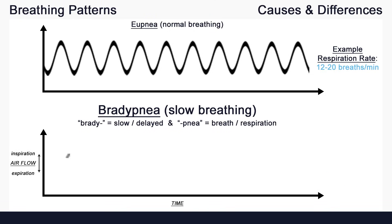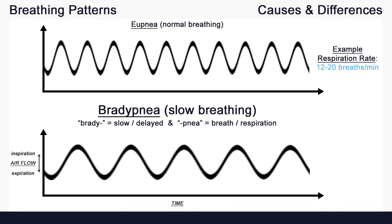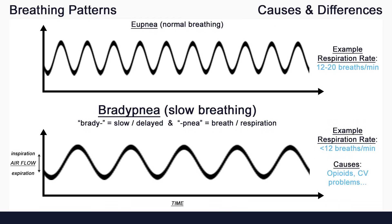Bradypnea, or slowed breathing, is simply the opposite of tachypnea. You can see that the inspirations and expirations are more spread out — they occur over a longer period of time. So with bradypnea, you see fewer breaths per minute. Bradypnea can be caused by many different things as well, including opioid administration, cardiovascular problems, and much more.